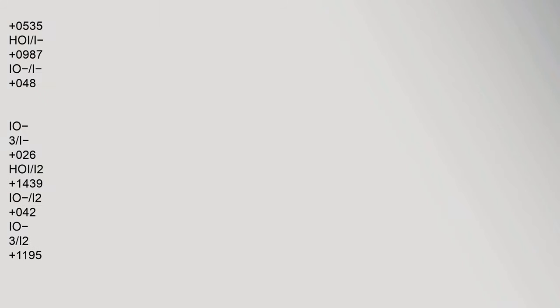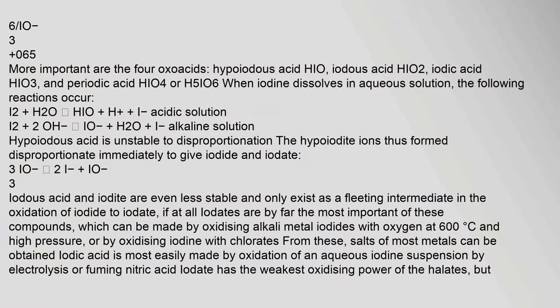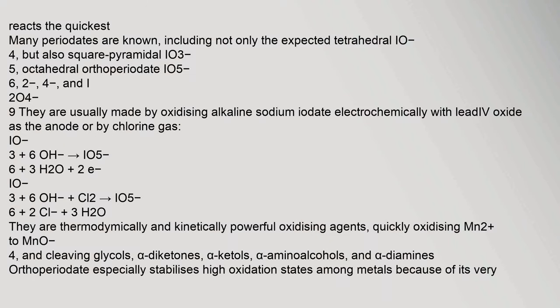The four important oxoacids of iodine are: hypoiodous acid (HIO), iodous acid (HIO₂), iodic acid (HIO₃), and periodic acid (HIO₄ or H₅IO₆). When iodine dissolves in aqueous solution, equilibria form between iodine, hypoiodite, and iodide in both acidic and alkaline conditions. Hypoiodous acid is unstable to disproportionation; the hypoiodite ions disproportionate immediately to give iodide and iodate: 3IO⁻ → 2I⁻ + IO₃⁻. Iodates are by far the most important of these compounds and can be made by oxidizing alkali metal iodides with oxygen at 600°C.